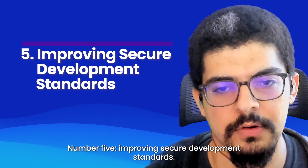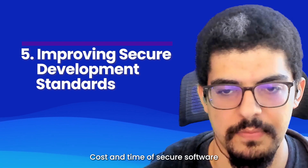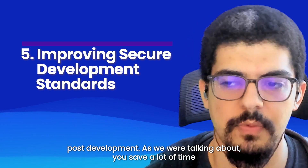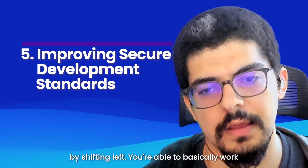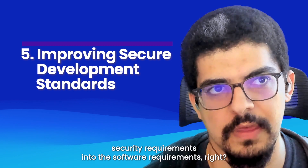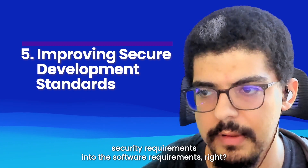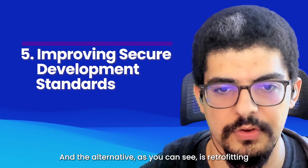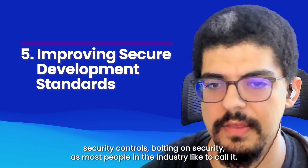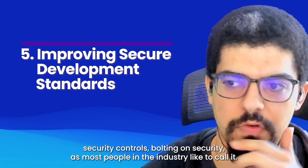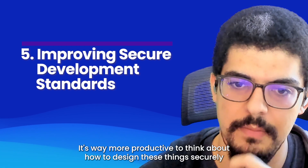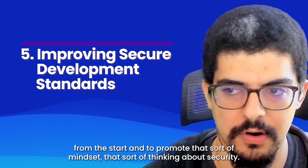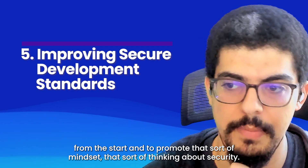Number five: improving secure development standards. The cost and time of secure software delivery are reduced by eliminating the need to retrofit security controls post-development. You save a lot of time by shifting left. You're able to work security requirements into the software requirements from the start. The alternative is bolting on security — retrofitting security controls — which is difficult. It's far more productive to think about how to design things securely from the start and to promote that mindset and that way of thinking about security.